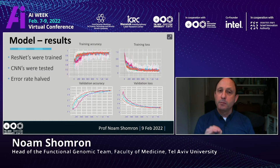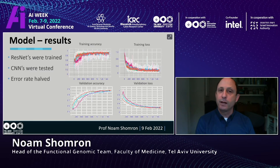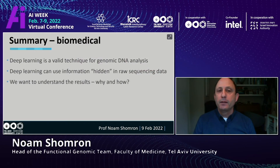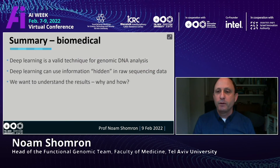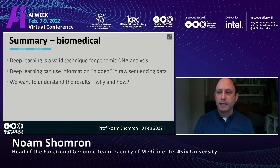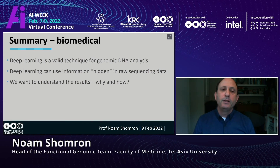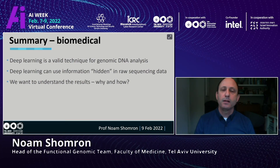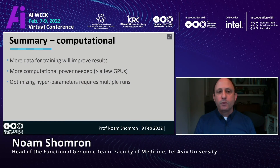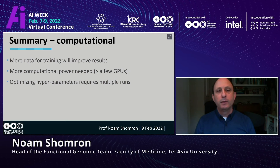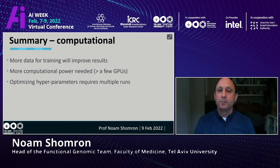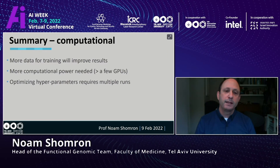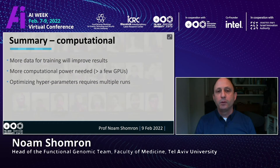This blood test can be taken as early as week 10 in the first trimester. Deep learning is a valid technique for genomic DNA analysis, can reveal hidden information in raw sequencing data, and more data plus more computational power will improve results. We are always limited and biased because we must fit our analysis to our resources, and optimizing hyperparameters requires multiple runs.